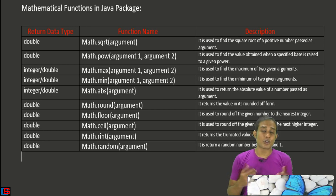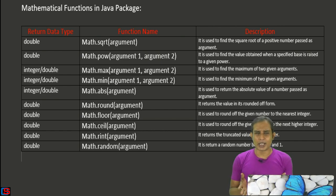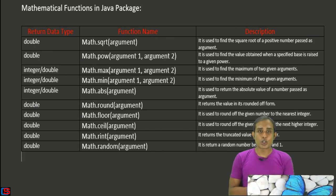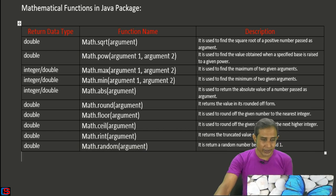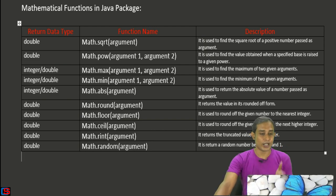Today in this video I'm going to describe some mathematical functions available in the Java programming language. There are lots of mathematical functions available in this package, but the most popular and mostly used ones I'm going to discuss. You can see there are lots of mathematical functions like math.sqrt, math.pow, math.max, math.min, math.abs, math.round, math.floor, math.ceil, math.random, and so much more. One by one I'm going to explain them.